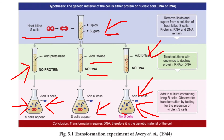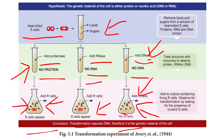This proved that DNA is the genetic material, not RNA or proteins. In the first experiment, proteases digested all protein, yet S cells appeared. In the second, RNase removed RNA, yet S cells appeared. Only when DNase removed DNA did transformation stop and no S cells form. Avery and colleagues concluded that DNA alone is the genetic material.